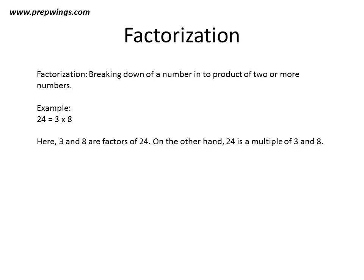We see an example over here. The example says that 24 is equal to 3 into 8, so this is a factorization of 24. In this factorization, 3 and 8 are factors of 24. On the other hand, 24 is a multiple of 3 and 8.